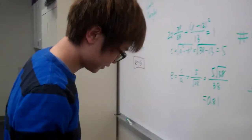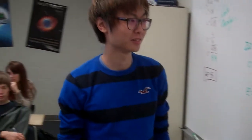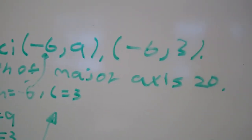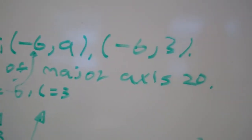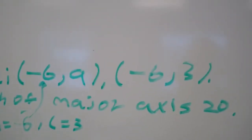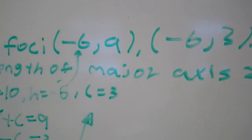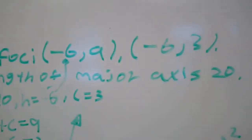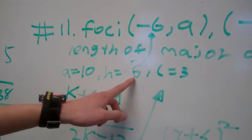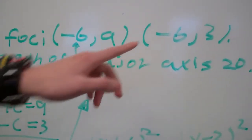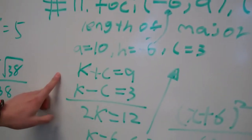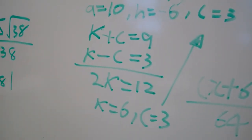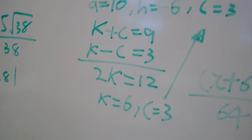Number 11 here is by Billy. Billy's done some nice work. Billy, they gave us the foci negative 6, 9 and negative 6, 3. How did you use that to find K and C? So here foci was minus 6 and minus 6, so H is minus 6, and then 3 is 9 and 3. I used K plus C is 9, and K minus C is 3. So that's enough to find K and C? Yeah.